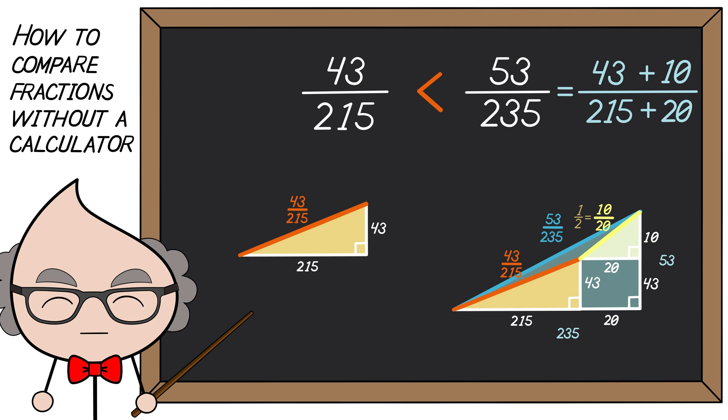As a result, when you combine the two triangles, the end result must be a triangle with a steeper slope than the one created by the first fraction.